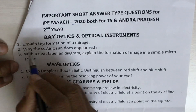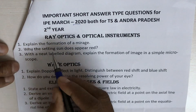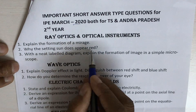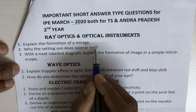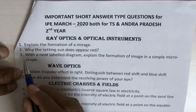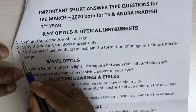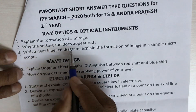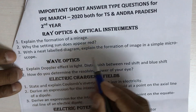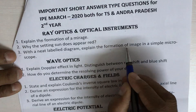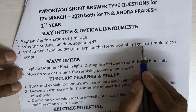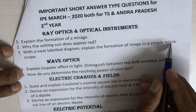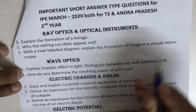Second question is: why does the setting sun appear red? Third question is: with a neat labelled diagram, explain the formation of image in a simple microscope.